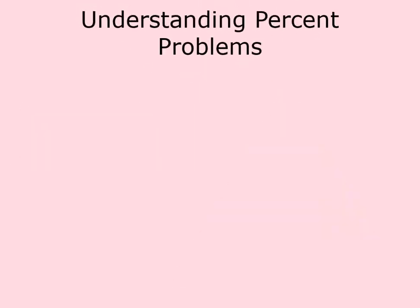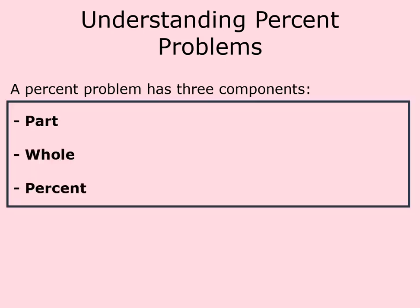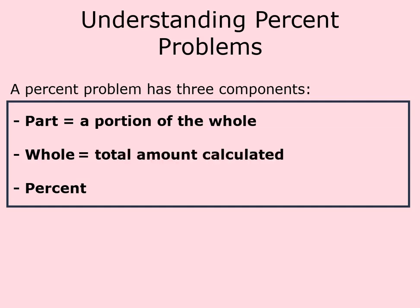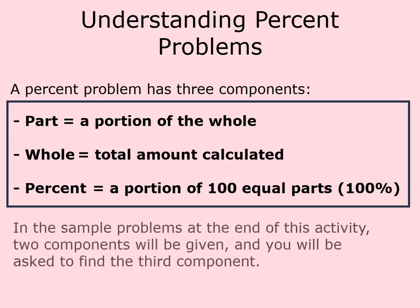Understanding Percent Problems. A percent problem has three components: part, whole, and percent. The part is a portion of the whole, the whole is the total amount calculated, and the percent is a portion of 100 equal parts. In the sample problems at the end of this activity, two components will be given, and you will be asked to find the third component.